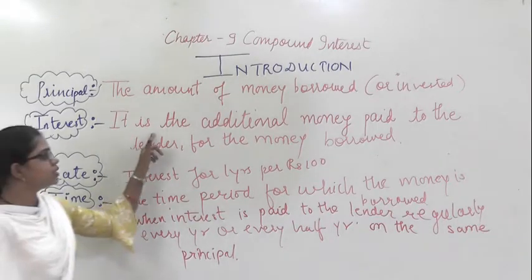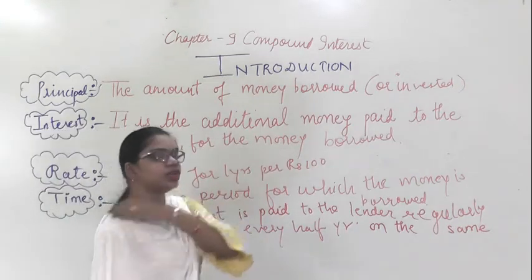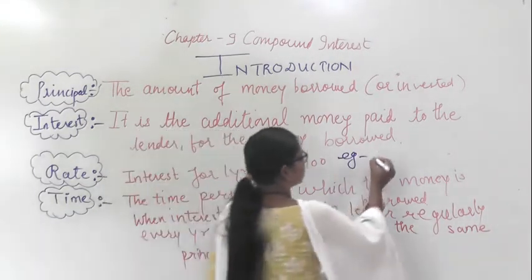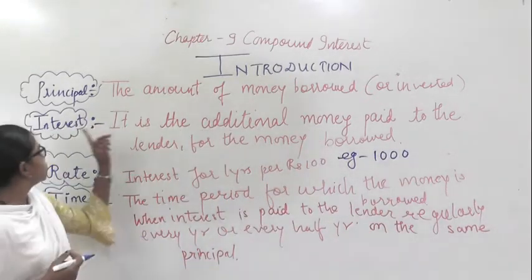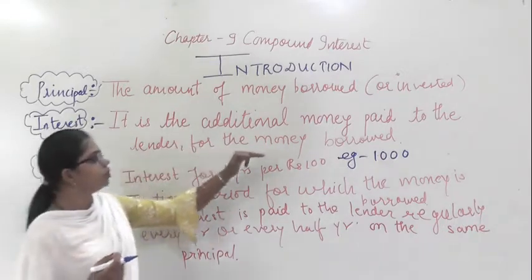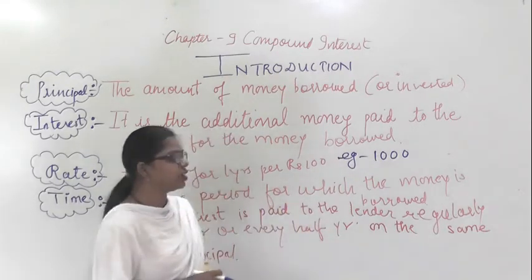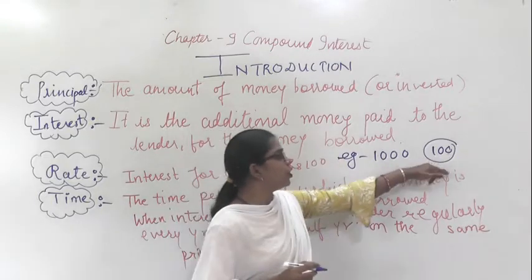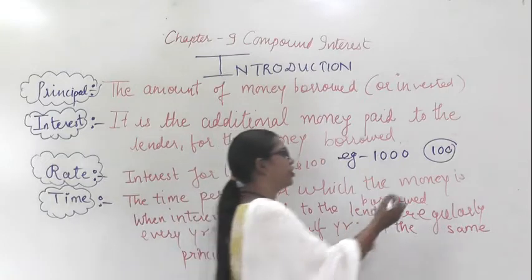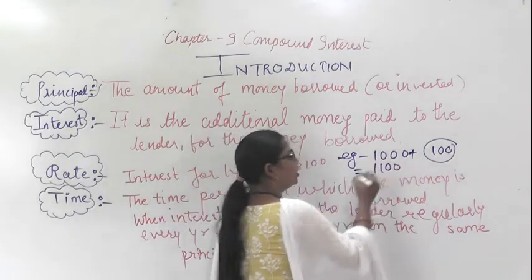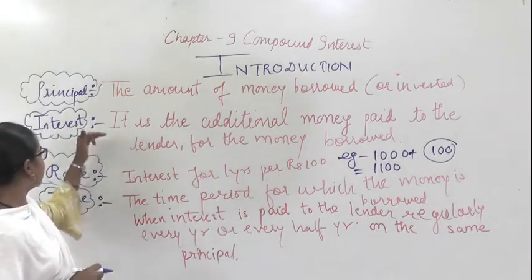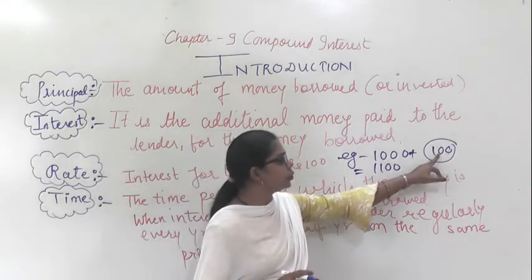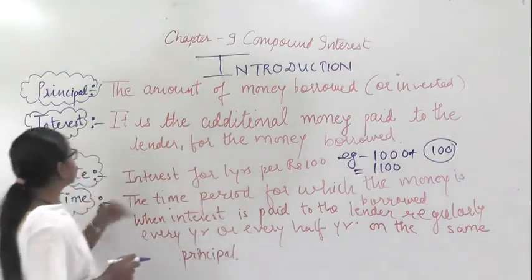Interest is the additional money paid to the lender for the money borrowed. Suppose you borrowed 1000 rupees from me. I said I will give you 1000 rupees, but after one week you have to give me 100 rupees extra. So you have to pay 1000 plus 100, that is 1100 rupees total. The extra 100 rupees is the interest.